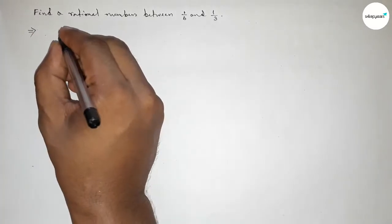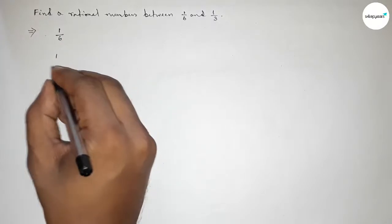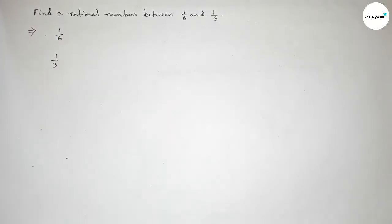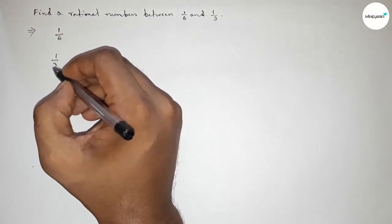Here given two fractions: 1 over 6 and 1 over 3. Now here the denominator of both fractions is not equal, so first we have to make the denominator same.